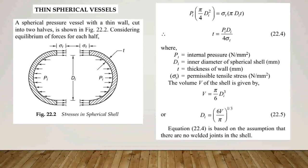For a thin spherical vessel cut into two halves, as shown in figure 22.2, pi is the internal pressure in newton per mm², di is the inner diameter of the spherical shell in mm, t is the wall thickness in mm, and sigma-t is the permissible tensile stress in newton per mm². Considering the equilibrium of forces for each half: pi times (pi/4) times di² equals sigma-t times pi times di times t. Therefore, t equals pi times di divided by 4 sigma-t. The volume of the shell is v equals pi times (pi/6) times di³, so di equals (6v/pi) raised to the power 1/3.